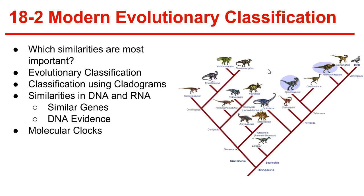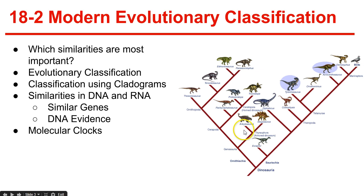Evolutionary classification is the strategy of grouping organisms together based on their evolutionary history. Here we can see the phylogenetic chart, which shows different dinosaurs and how they are related to each other through evolution. Species within a genus are more closely related to one another than to species in another genus.